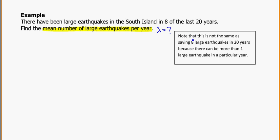And here we're saying, note that this is not the same as saying 8 large earthquakes in 20 years, because there can be more than one earthquake in a particular year. So again, that 8 earthquakes over the last 20 years, they could have happened in any time period. They could have happened all in one year, as we know.